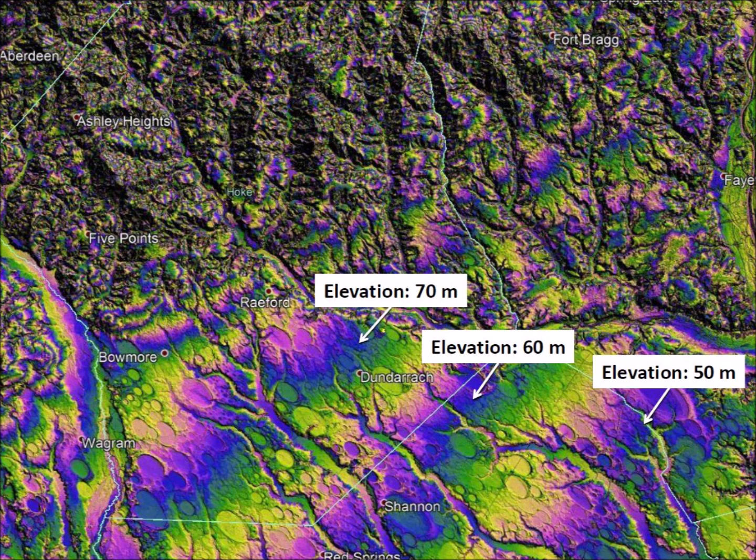The distance between the 60 and 70 meter contour lines is also about 11 kilometers. However, the distance between the 70 meter and 80 meter contour lines is 9 kilometers, which is a slightly steeper grade, but still very flat.